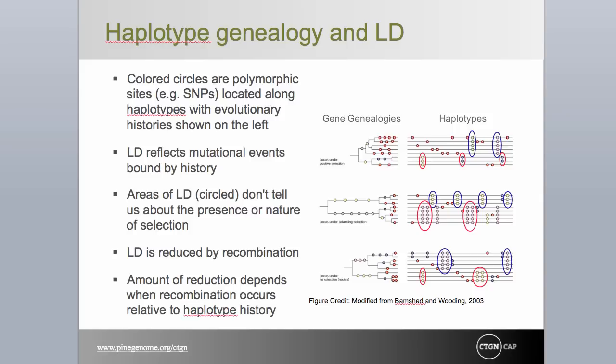We conclude this module with a reference to gene genealogies as introduced in Module 7, extending the concept to haplotype genealogies and using it to trace how history shapes LD. Mutational events near to one another share common evolutionary fates, unless broken apart by recombination. The patterns of LD seen today reflect literally thousands of years of history, influenced by the rate of mutation and recombination, the strength and direction of selection, and demographic events such as population admixture and bottlenecks. As we garner more sequence for more species, and more individuals within species, more of the evolutionary history of organisms will be revealed.